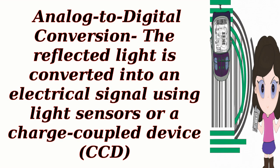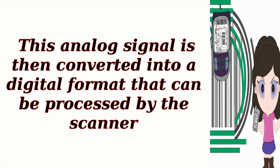Analog to digital conversion: The reflected light is converted into an electrical signal using light sensors or a charge-coupled device (CCD). This analog signal is then converted into a digital format that can be processed by the scanner.